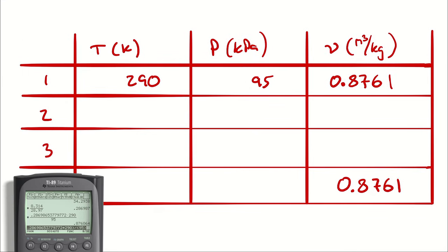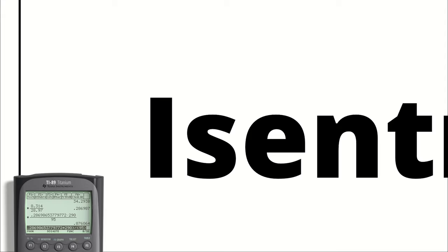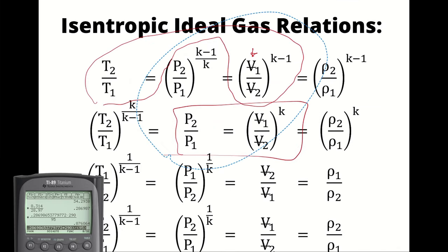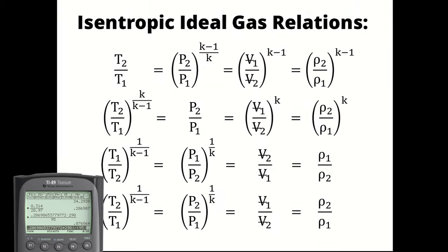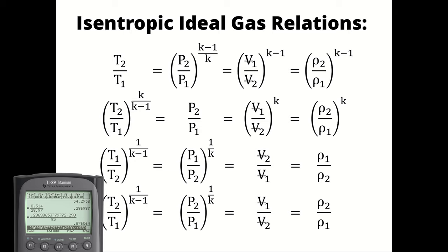Because we're using the cold air standard with constant specific heats, we use the isentropic ideal gas equations to go from state 1 to state 2. We write T2 = T1 × (V1/V2)^(k−1). V1/V2 equals the compression ratio r, so T2 = 290 × 20^(1.4−1). We've looked up Cp = 1.005, Cv = 0.718, and k = 1.4 from Table A-20 at 300 K for the cold air standard.